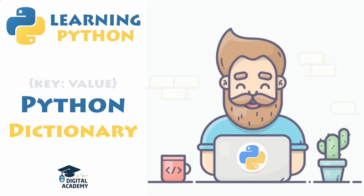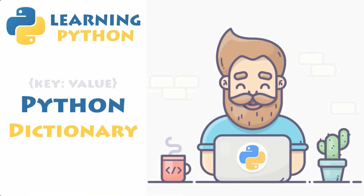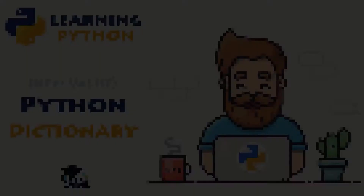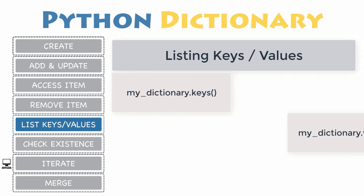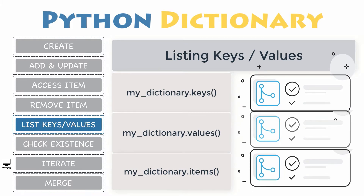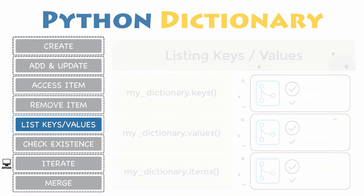In this video, you will discover dictionaries in Python. There are three dictionary methods that return all of the dictionary's keys, values, and key-value pairs. These methods are useful in loops that need to step through dictionary entries one by one, because all three methods return an iterable object.